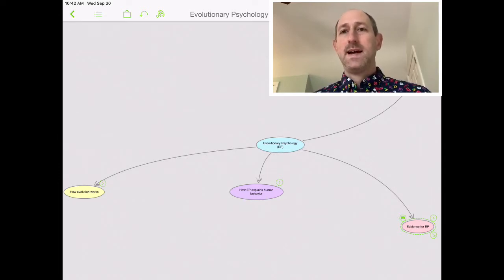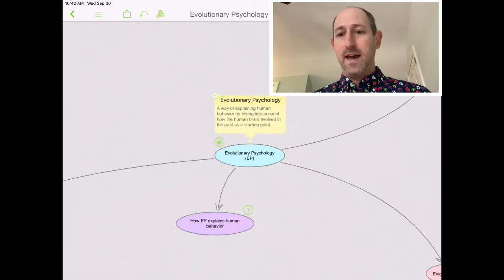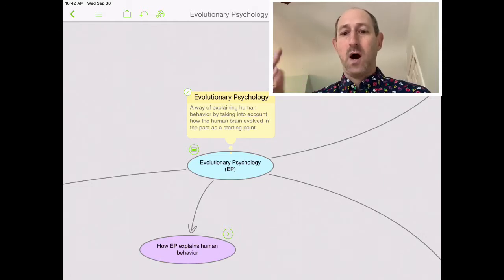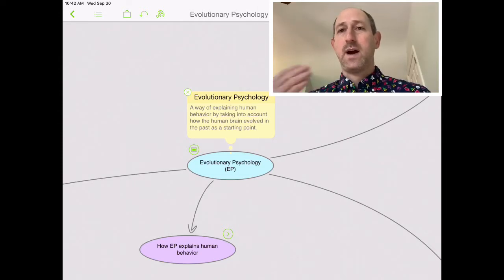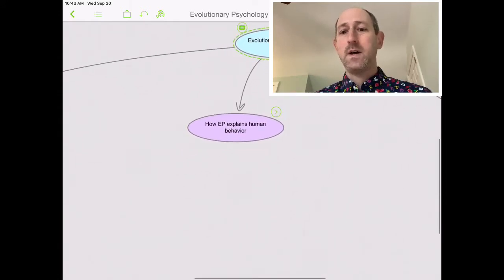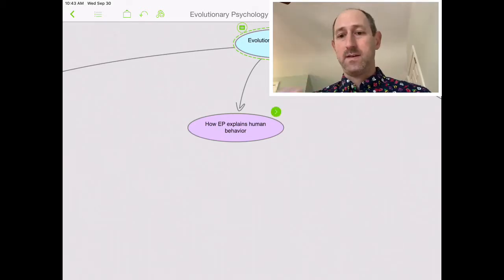Let's begin with the idea of evolutionary psychology. Just as a beginning point, evolutionary psychology is a way of explaining human behavior by taking into account the evolved psychology that we have. Our brain evolved over thousands of years, and we should take into account how it evolved when we try to explain human behavior. So let's look at how evolutionary psychology tries to explain human behavior, like what the model is.